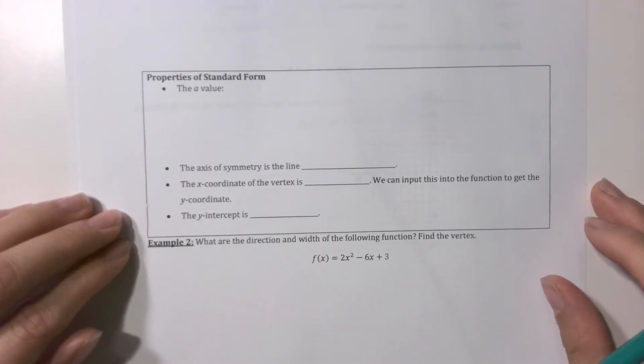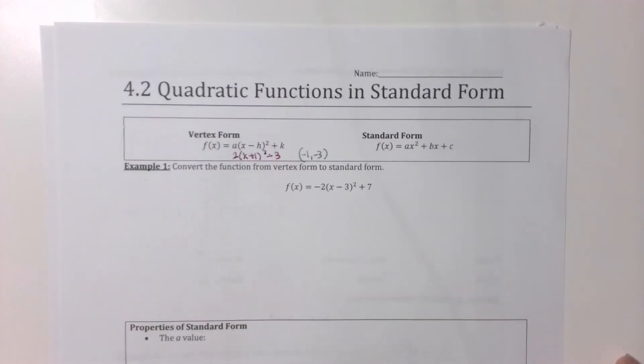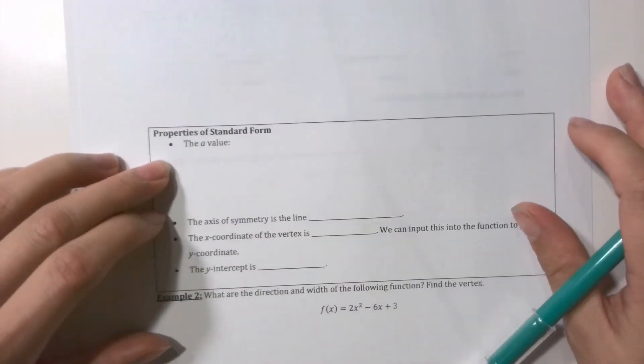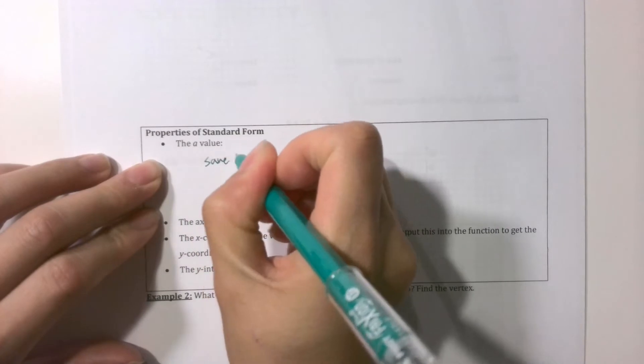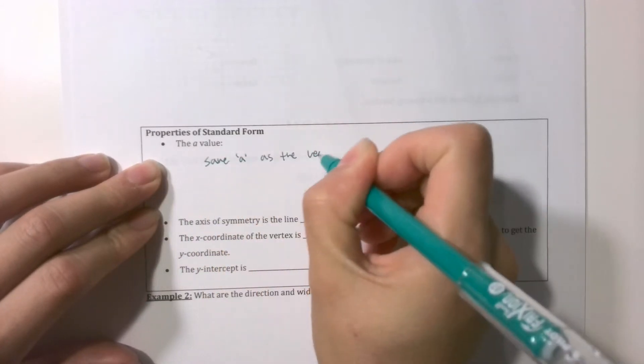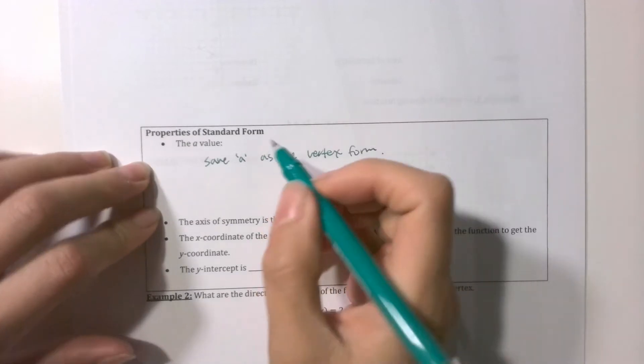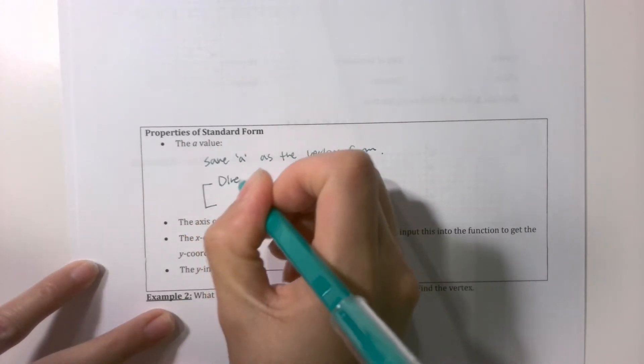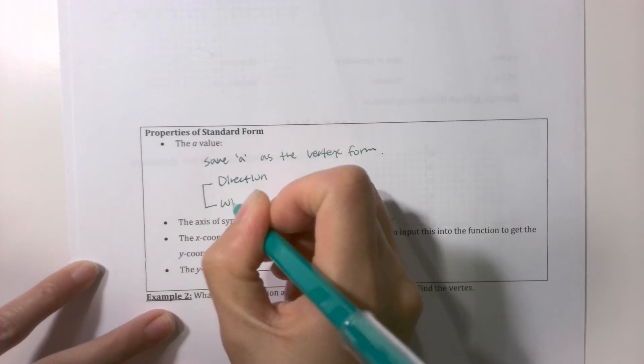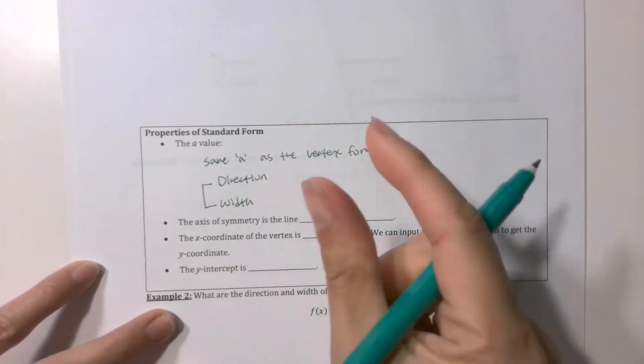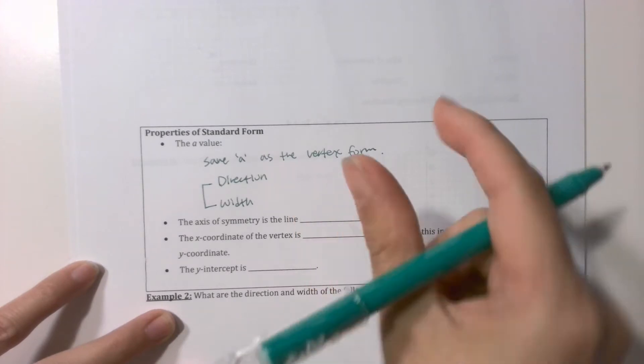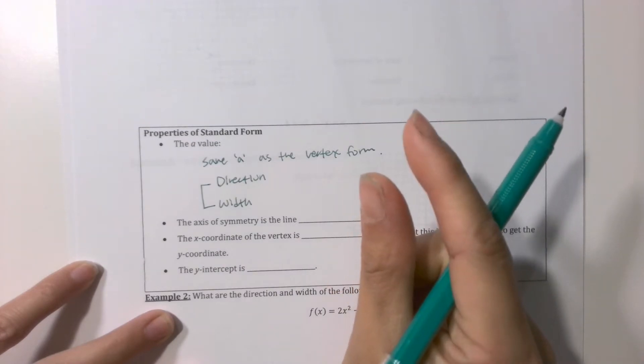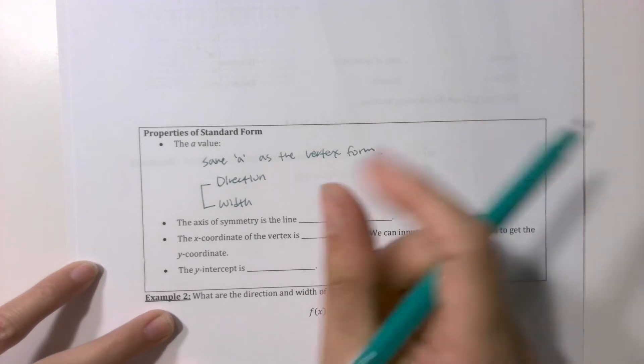So the property of the standard form, the a value. This a value, those a value, two are the same a value. So the a value in the standard form is same a as the vertex form. And what else do you have to know about that a value? The a value tells you two things. What are those two things? The direction and the width of the parabola. So if a was positive, it's up. If a was negative, it's the upside down u. If absolute value a is greater than 1, it's narrow. If absolute value a is less than 1, it's going to be wider than the parent function. So review section 4.1.